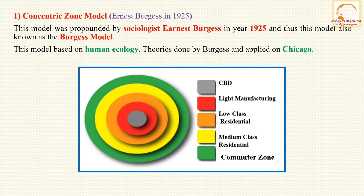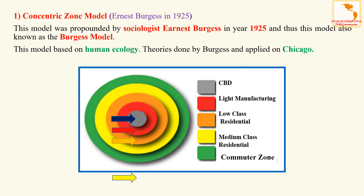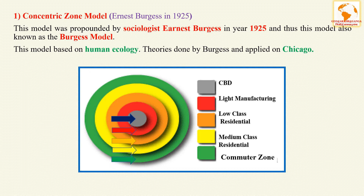Looking at the diagram: the first zone is the CBD, the second zone is light manufacturing, the third is low-class residential, the fourth is medium-class residential, and the last is the commuter zone. Now let us see the assumptions of this model.